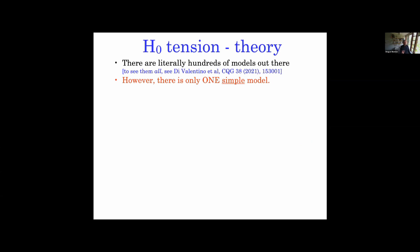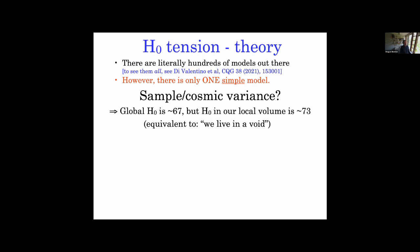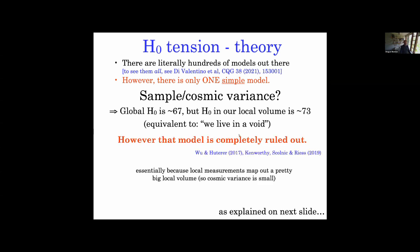There is one very special, simple model: cosmic variance — the idea that the global H0 is 67 but we just happen to live in a corner of the universe where H0 is 73. Before I talk about the PRL paper, I want to say a few words about this model. In my opinion it is completely ruled out, based on one of the most satisfying papers I've ever worked on, with Heidi Vu. It was very satisfying because it's a completely foolproof way to precisely quantify the error bar coming from sample variance.